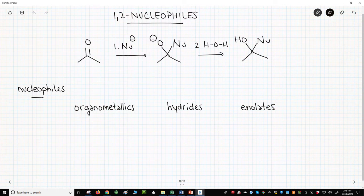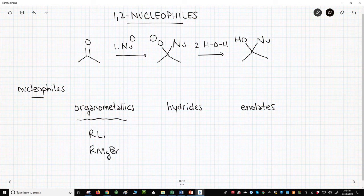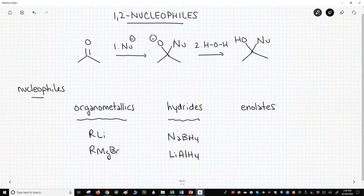Before talking about Michael donors, let's see the nucleophiles that we've likely seen attack carbonyls in a 1-2 addition. A sample reaction is at the top of the screen. Nucleophiles like this tend to be organometallics like organolithium or Grignard reagents, hydrides like sodium borohydride and lithium aluminum hydride, and enolates, as you may have seen in chemistry like the aldol reaction.